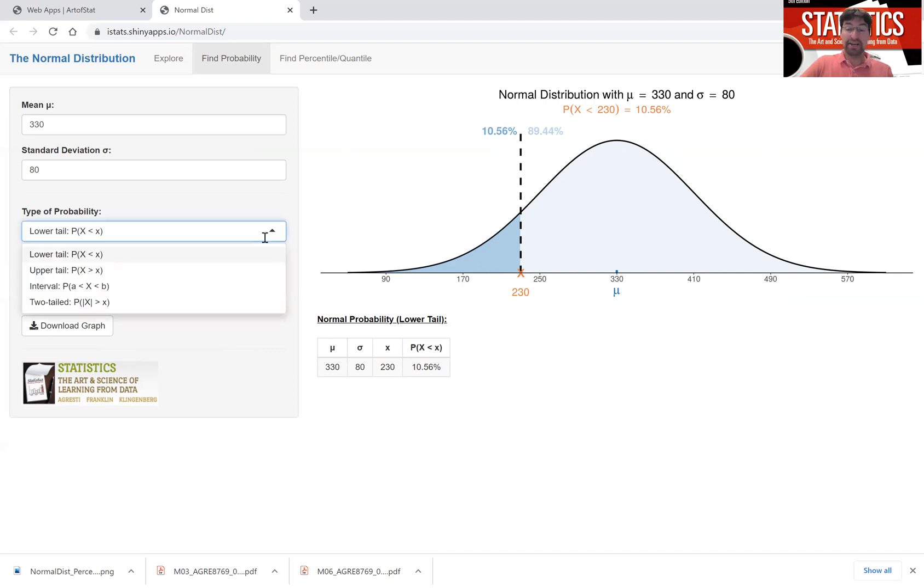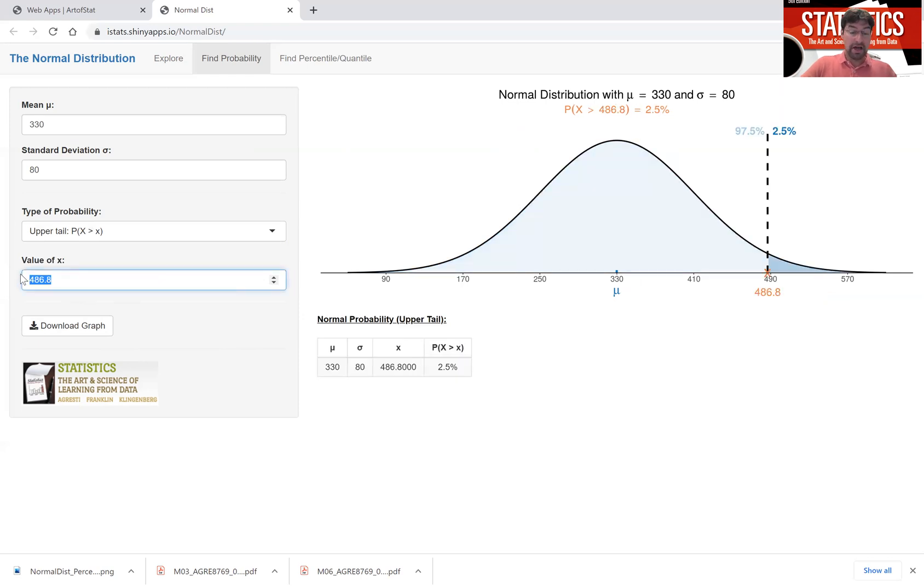If you want to find upper tail probabilities, suppose you want to figure out the probability of a talk time larger than let's say 450 minutes, then you just type in 450 for the value of x on the x-axis, and you get that the probability is 6.7%. The probability of having a talk time that is larger than 450 minutes is 6.7%.